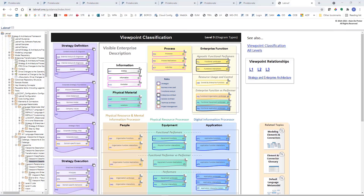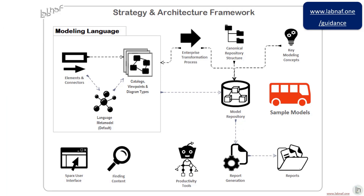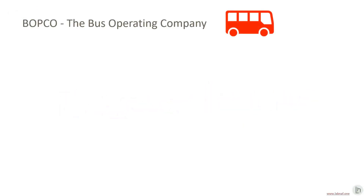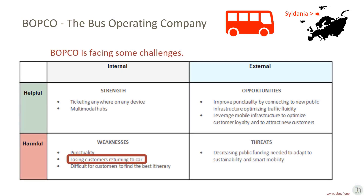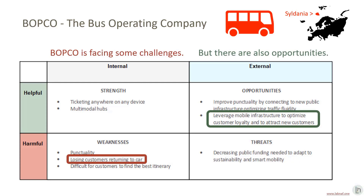Now that we had a quick overview of the guidance website, we can go back to our presentation to introduce the demo. The demo is about Bobco — the bus operating company. The case study is about Bobco, operating in Sildenia, somewhere in the north. Bobco is facing some challenges like losing customers returning to their cars because of COVID. But there are also technology opportunities to improve customer loyalty and attract new customers. This SWOT is a deliverable in the LabNorv process.